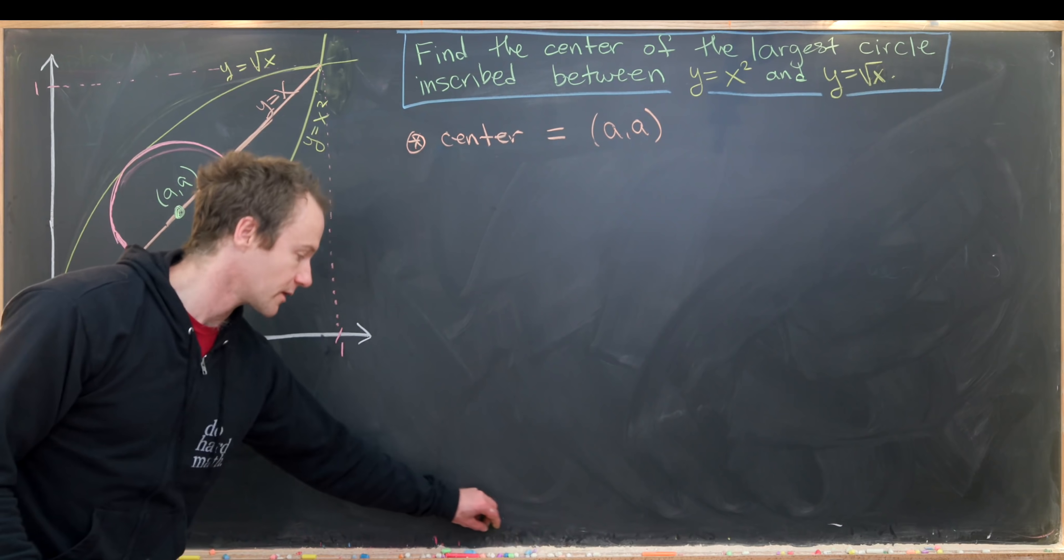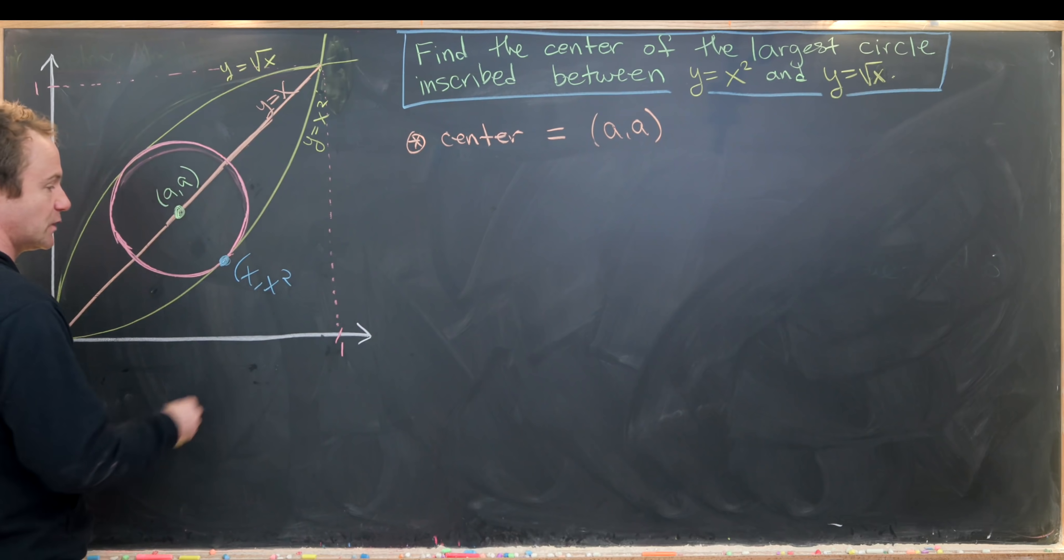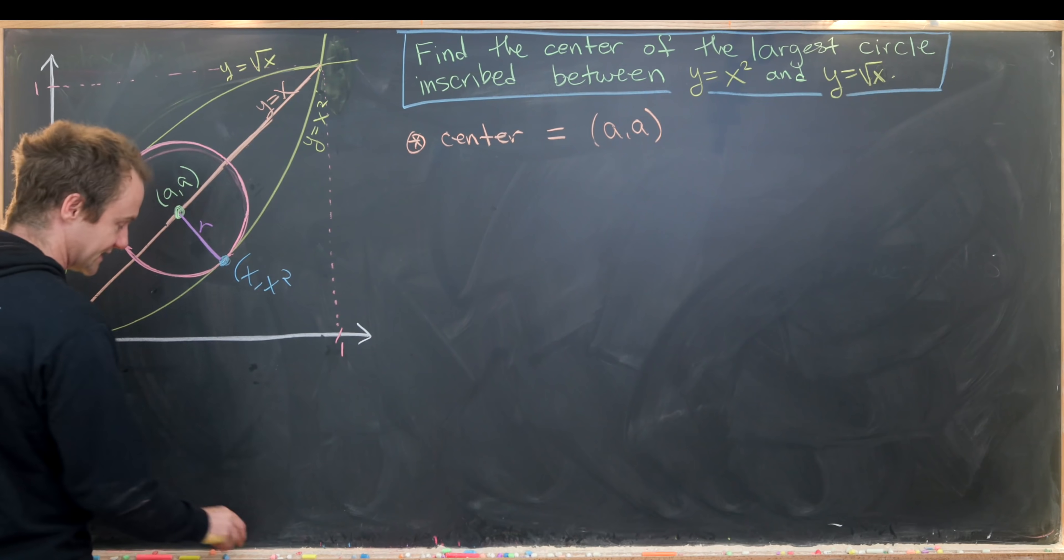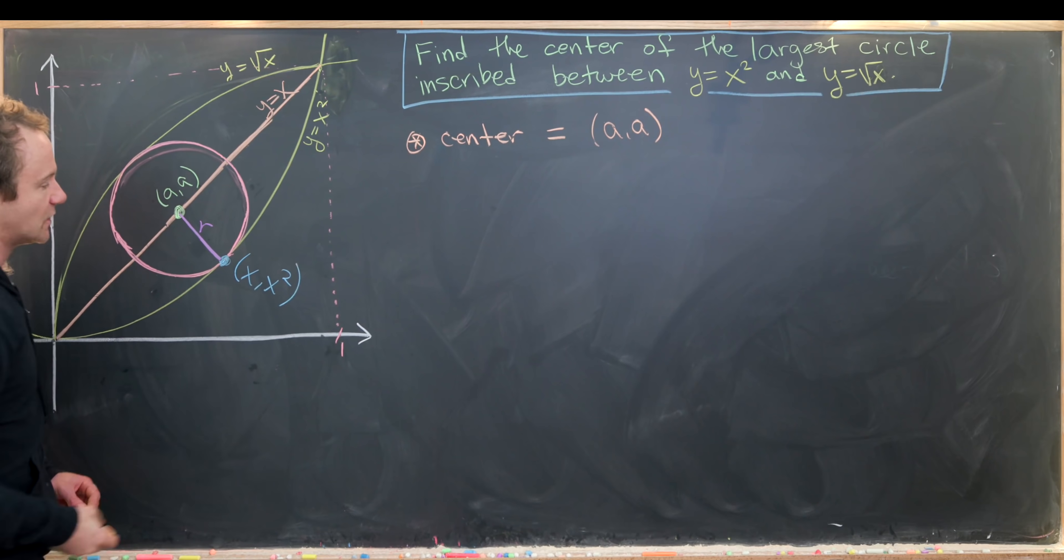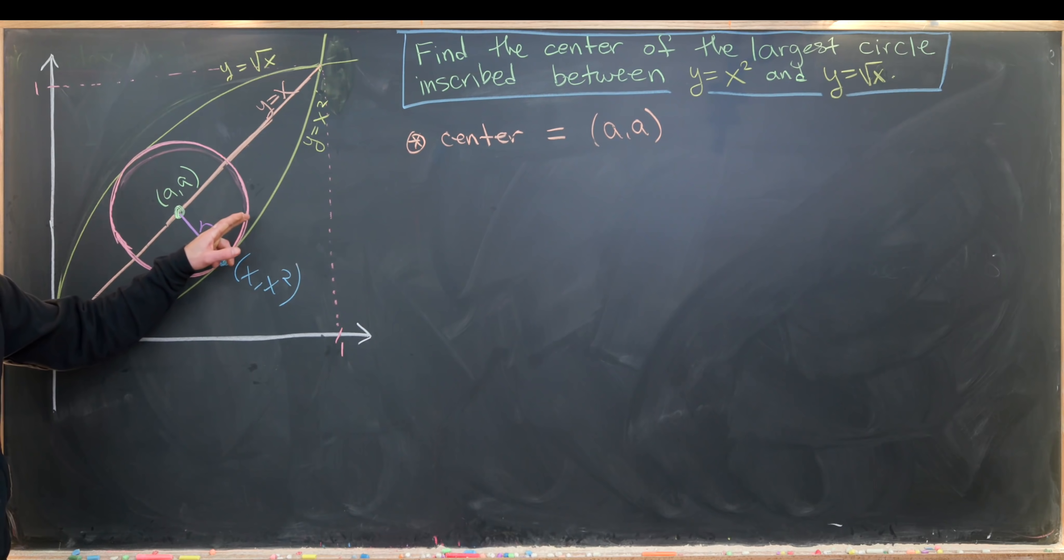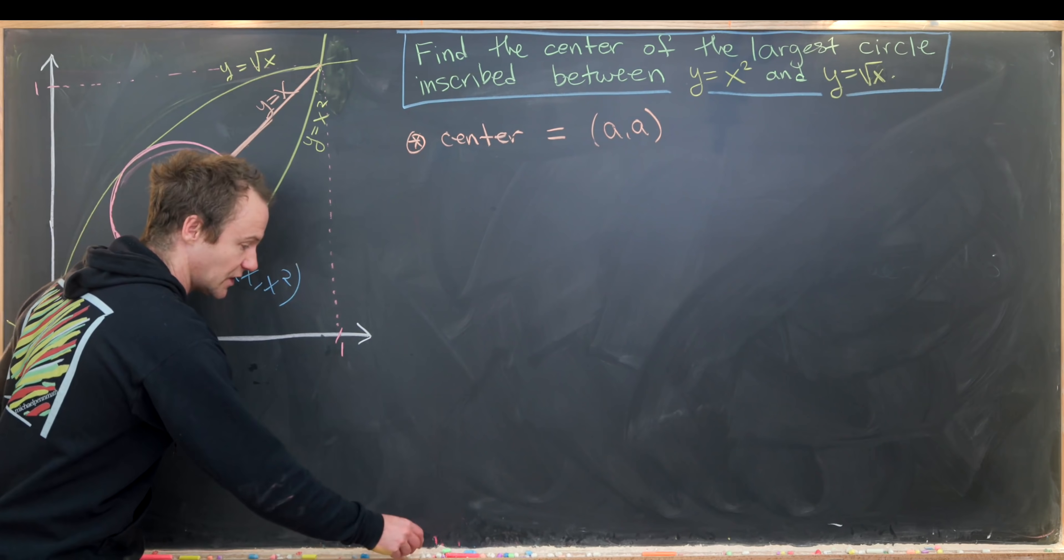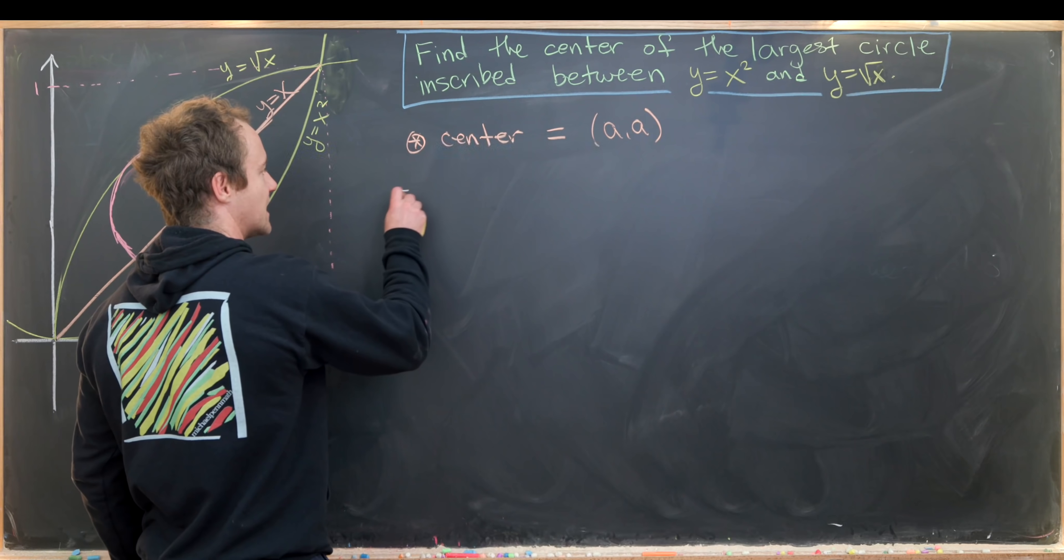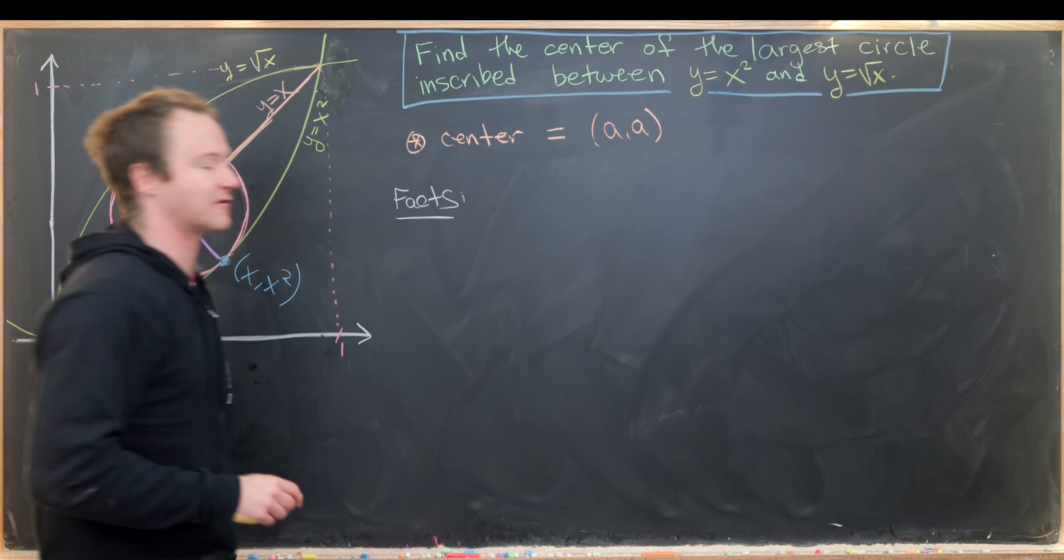Furthermore, the distance between this point x comma x squared and a comma a will be exactly the radius of the circle. Any radius of a circle will intersect the circle at a point of tangency, and since we have this inscription of the circle into this curve, it must be a point of tangency of the curve as well. Now we can get going with our calculation.